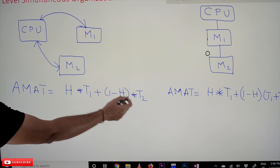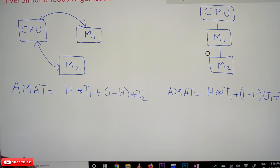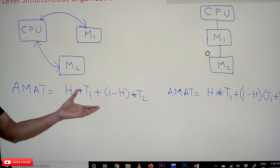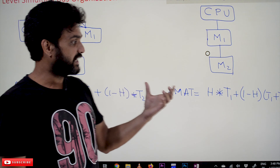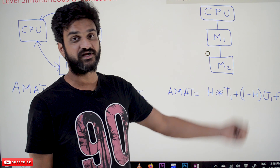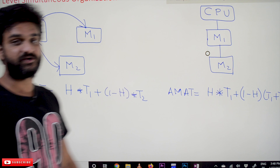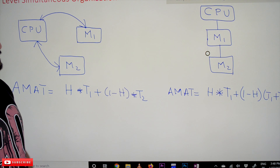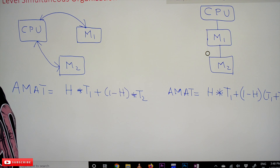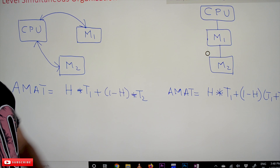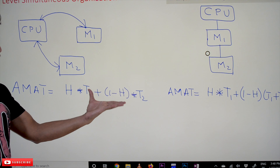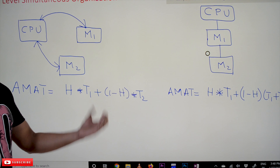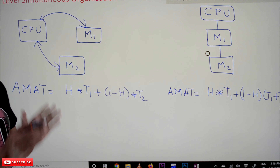AMT stands for Average Memory Access Time. The average memory access time formula for simultaneous organization is one formula, and for hierarchical memory organization it is a different formula. The values in these formulas are based upon the hit ratio and miss ratio.